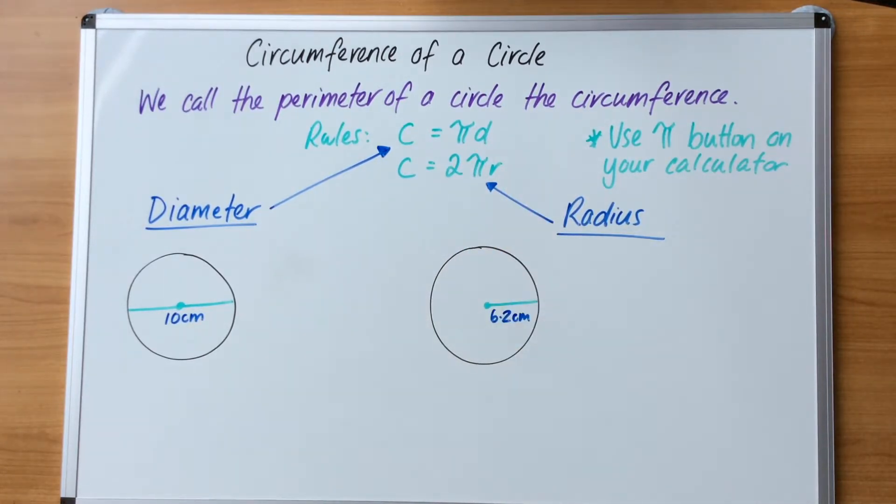Let's have a look at this now. We're going to calculate the first one here using the diameter. We need to write the rule, so circumference equals, and because it's a diameter question we go pi D. The next line is going to be a substitution.